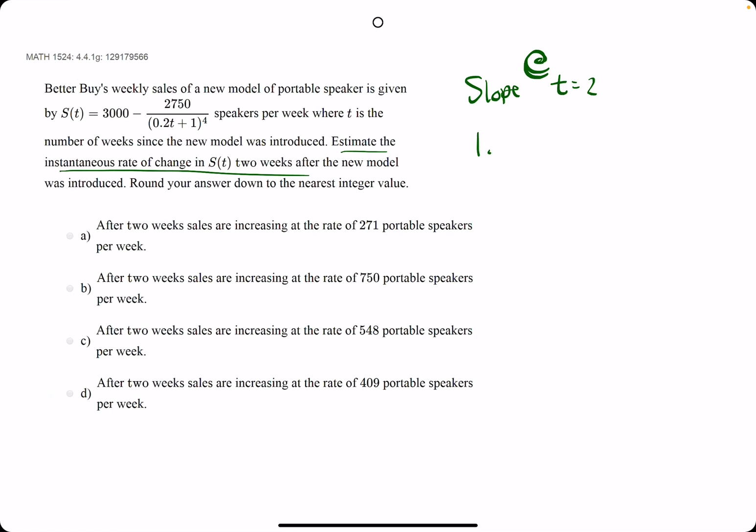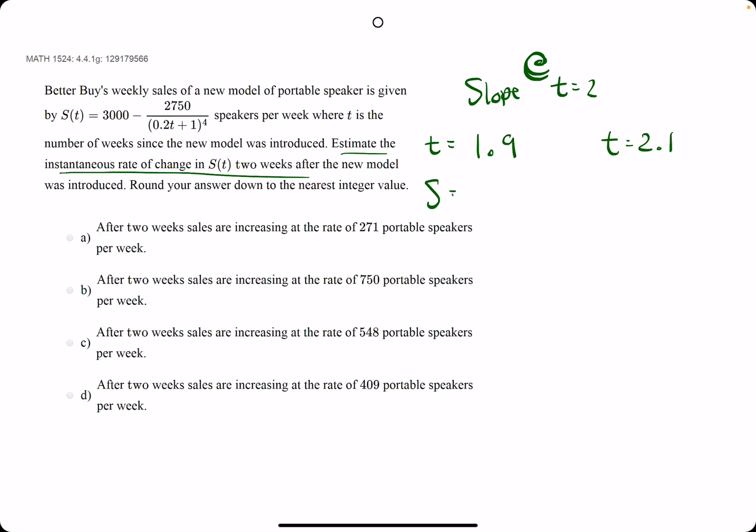We pick a point left, a t value to the left, and a t value to the right of 2. So we're going to plug in these t values into the function s. We will get our first s value.